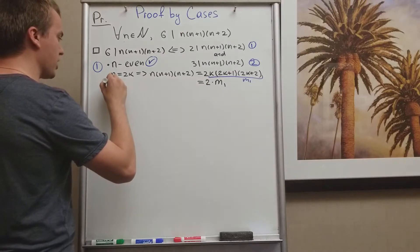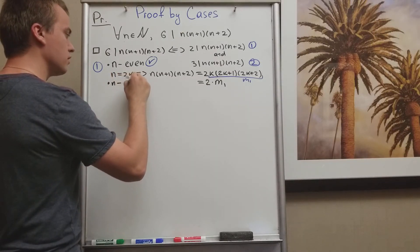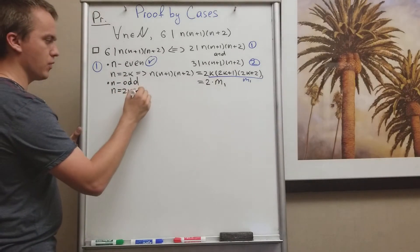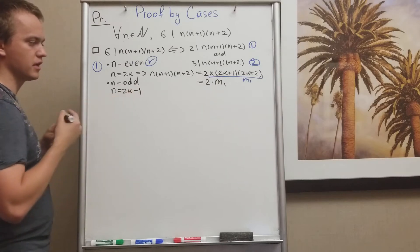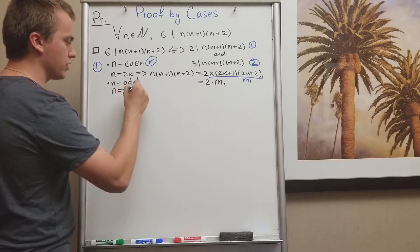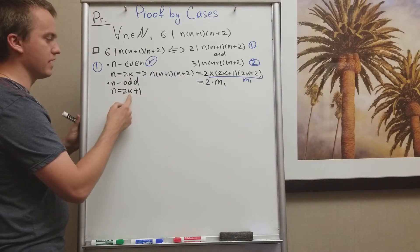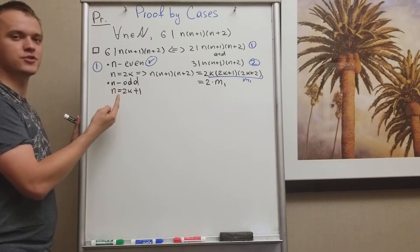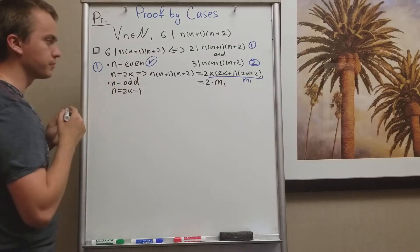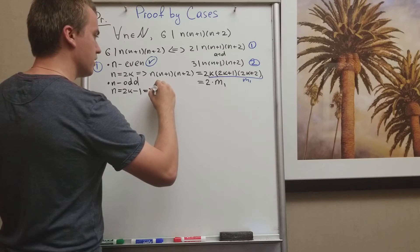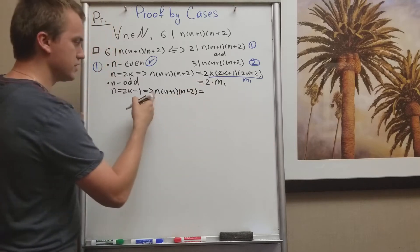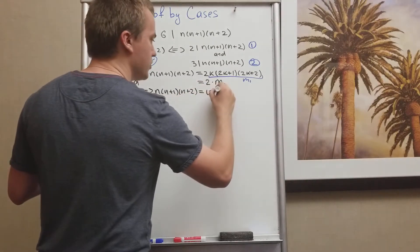Let's check when n is odd. When n is odd, I will write n as 2k minus 1. Why minus 1? Because when k equals 1, my n will start with 1. If I used 2k plus 1 with k equals 1, my smallest n would be 3. But I want my smallest n to equal 1, so I use minus. Then n, n plus 1, n plus 2 becomes 2k minus 1.